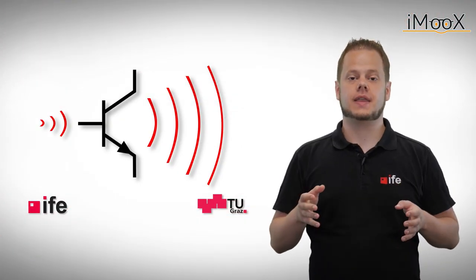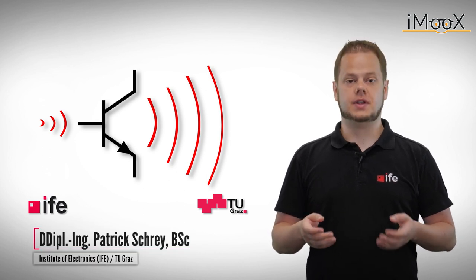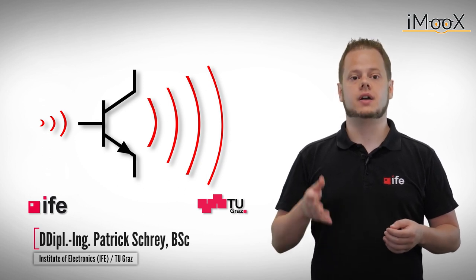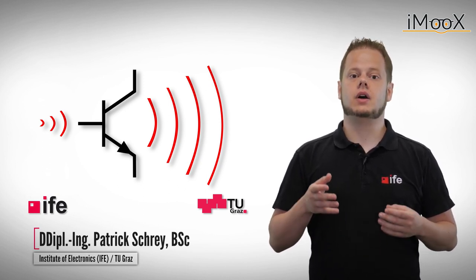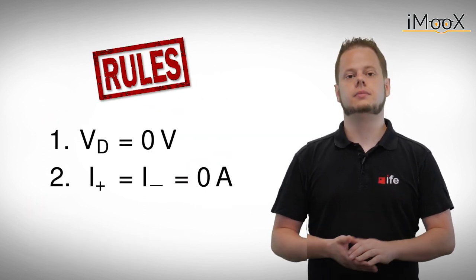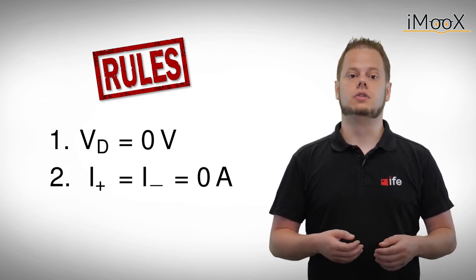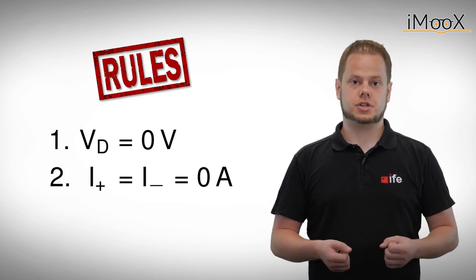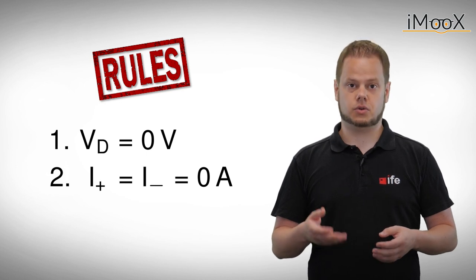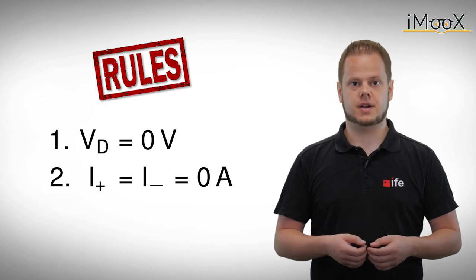In our previous videos we analyzed some basic circuits incorporating operational amplifiers with negative feedback. For all those calculations we assumed that our operational amplifier is ideal, which made our investigations much easier because we could apply the rules we've learned. But in the lab there is no such thing as an ideal operational amplifier — there are only real ones. Real operational amplifiers no longer satisfy our rules and have other properties you might want to consider during circuit design. So let's talk about non-idealities of operational amplifiers.